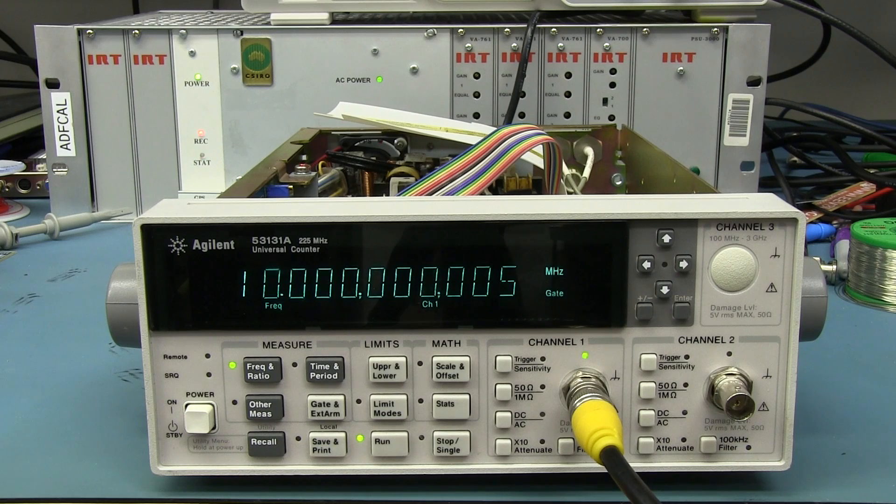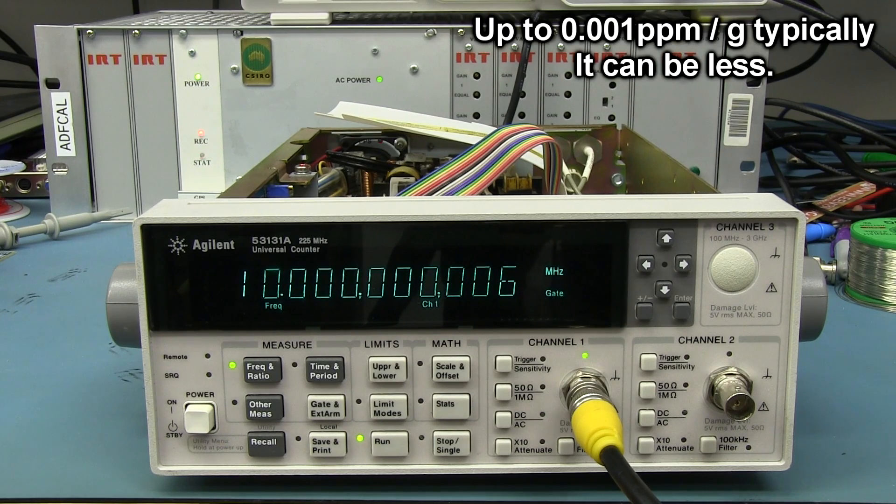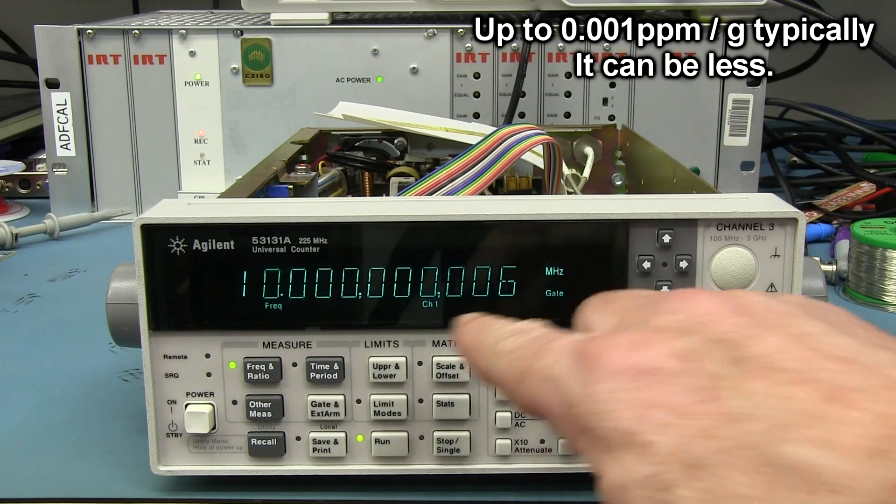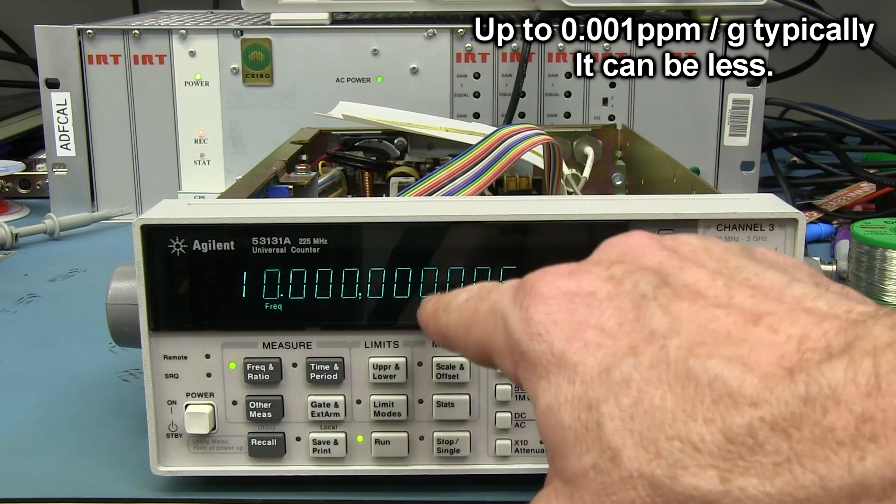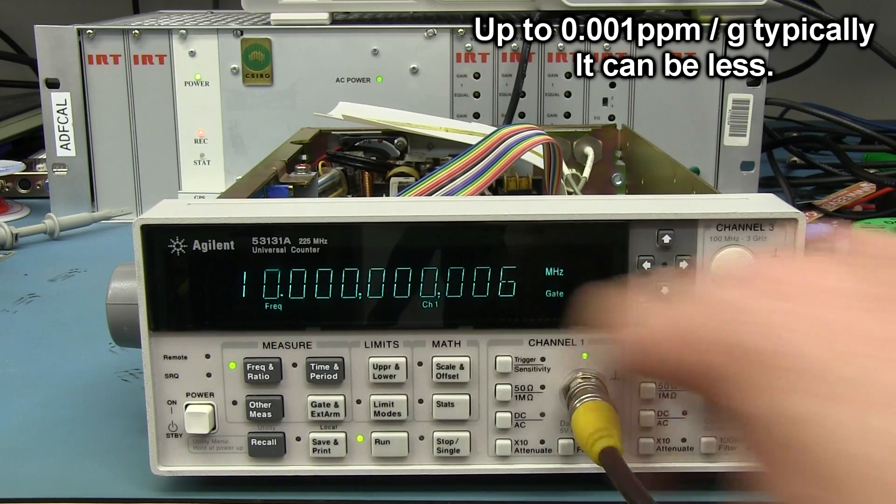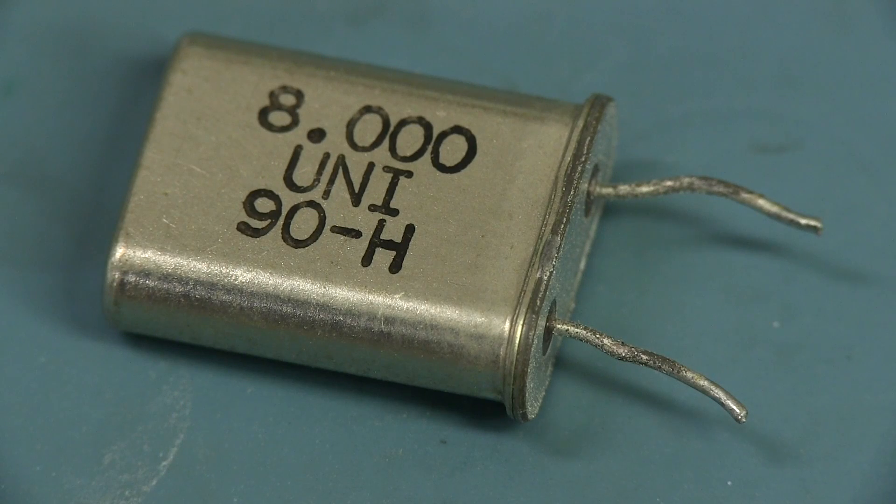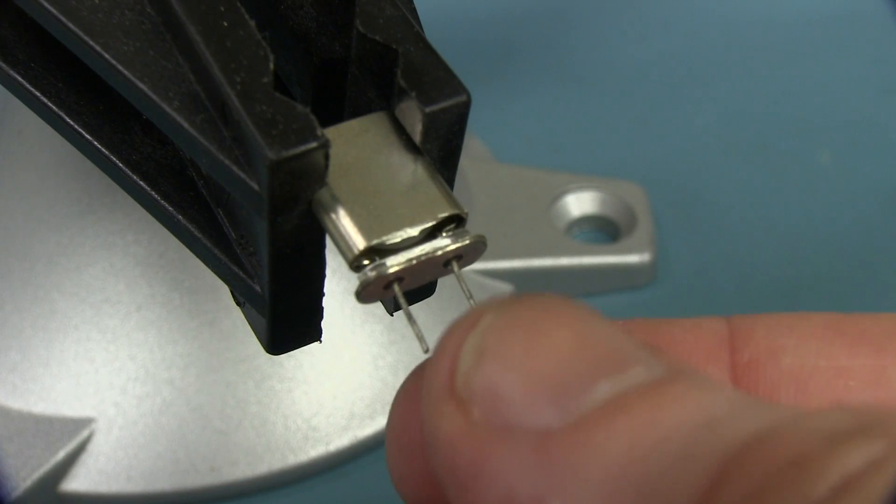And it turns out that your average quartz crystal has a gravitational change of roughly 1 times 10 to the minus 9 per G. So that translates to, on a 10 megahertz signal, a 10 megahertz crystal like this, 0.01 hertz basically per G. So take your humble quartz crystal here and let's crack this thing open and actually see what's inside this thing.